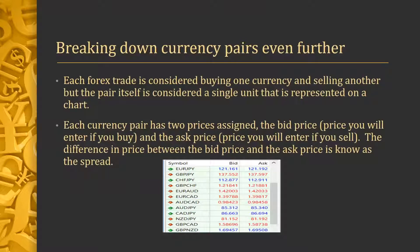Each Forex trade is considered buying one currency and selling another, but the pair itself is considered a single unit that is represented on a chart. Each currency pair has two prices assigned: the bid price and the ask price. The difference in price between the bid price and the ask price is known as the spread.